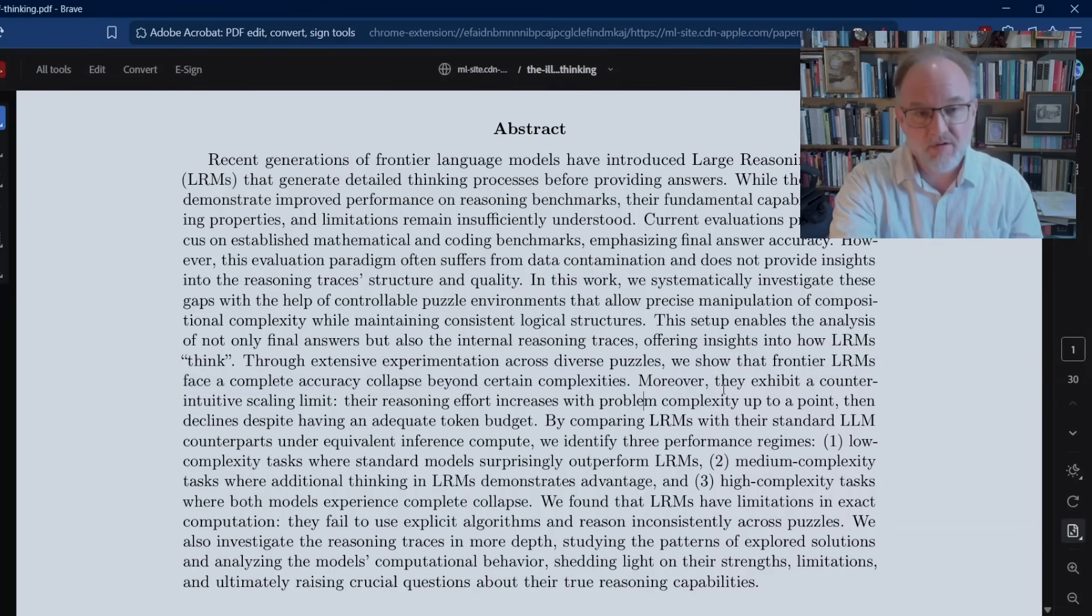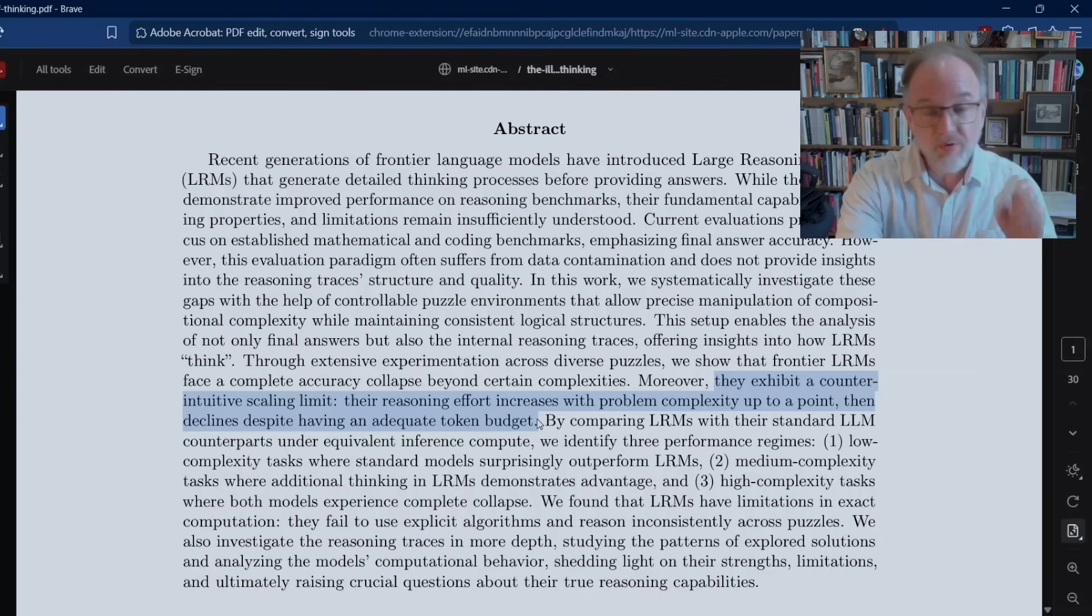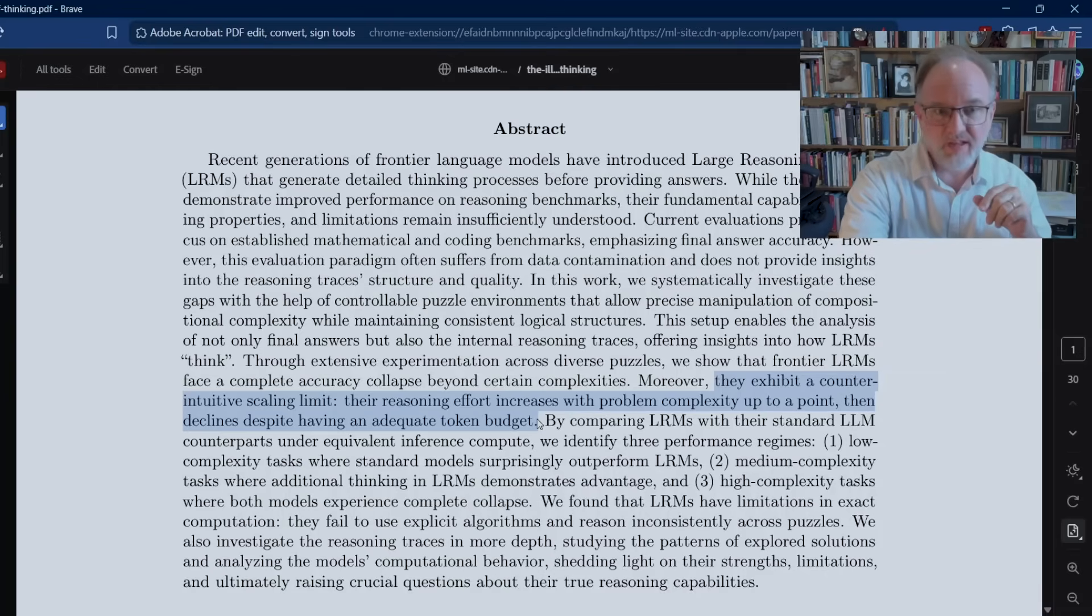Moreover, a second conclusion: these AI models exhibit a counterintuitive scaling limit. Reasoning effort increases with problem complexity up to a point, and then reasoning effort declines, despite having an adequate token budget. So tokens here just means the amount of resources that the computer can throw at the problem. The computer generates more effort up to a certain point of complexity. And once it hits that collapse point or shortly afterwards, it actually decreases its draw upon its available resources in trying to continue to work through the puzzle. That is counterintuitive and unexpected.